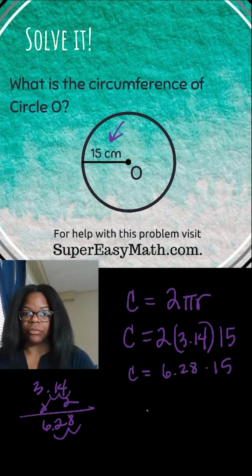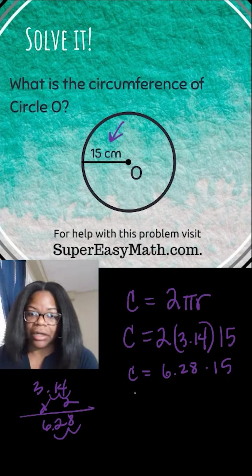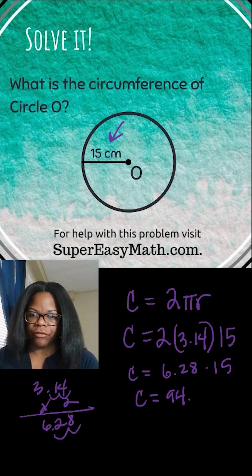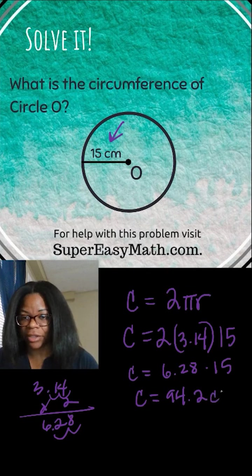Now I need to multiply the 6.28 by 15. When I do that, I'm going to end up with 94.2. And now because I'm at the end and I don't have any other symbols to put on, I will add the centimeters, so cm right at the end for my final unit.